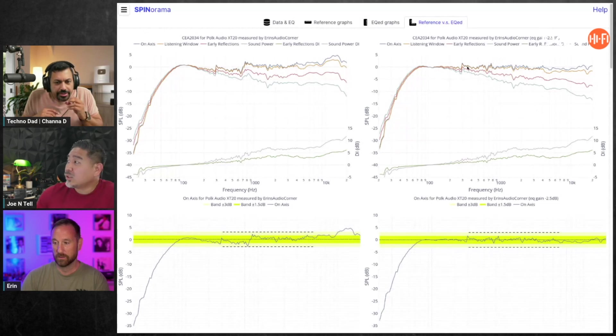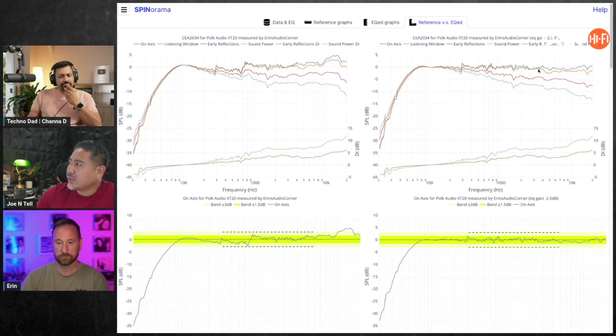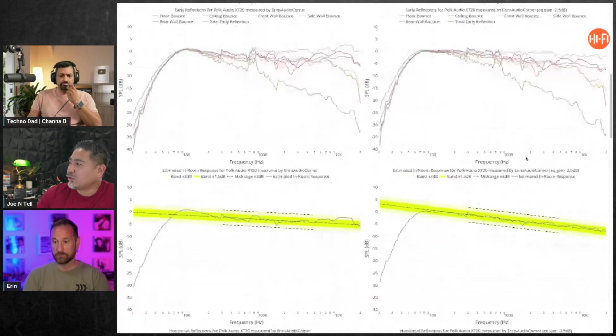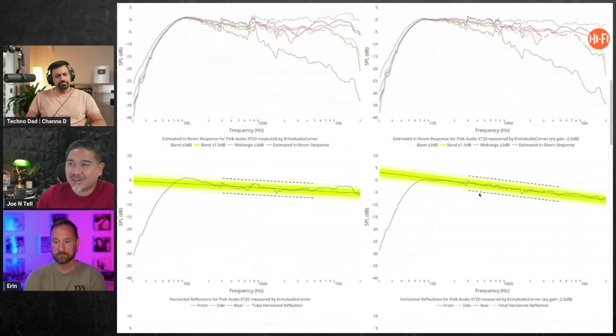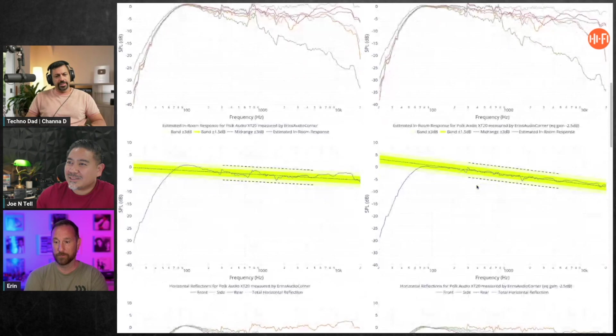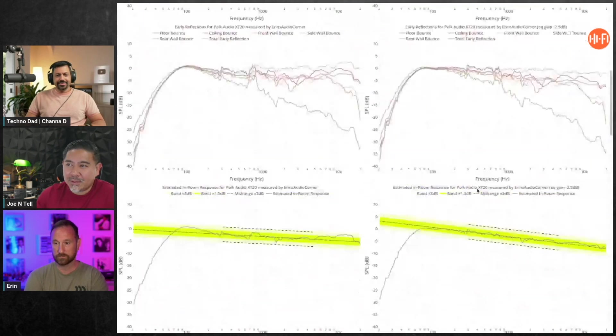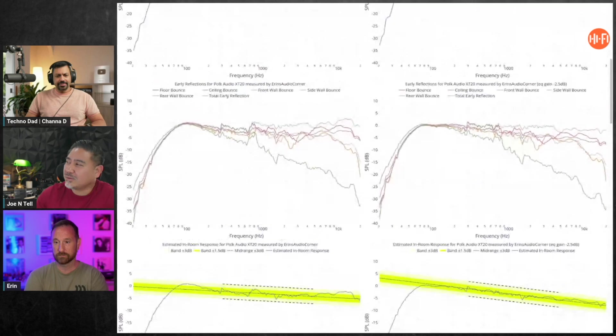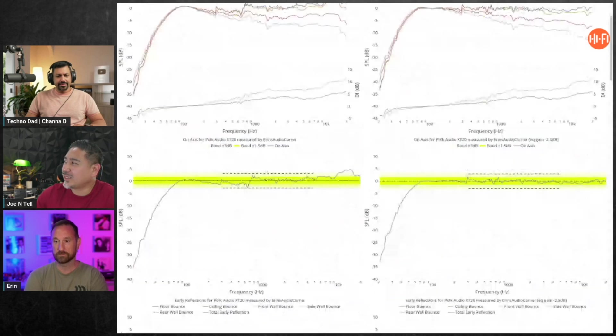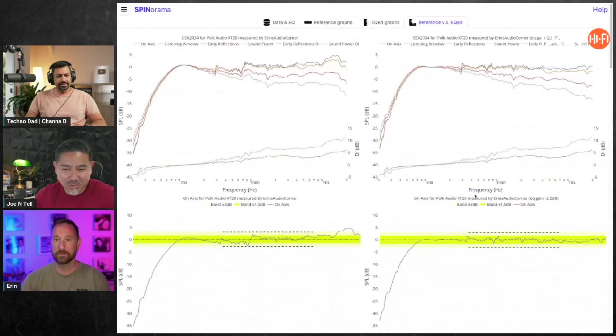The cool thing is he shows what happens when you apply EQ to this, and you can compare it. So this is with EQ here on the right, on-axis looking good, right? And then he also shows the predicted in-room response. Pretty good. These are $239 a pair.